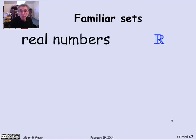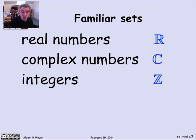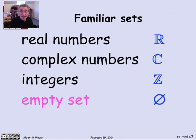We've already talked about some familiar ones. There's the real numbers, for which we had this symbol R in a special font, and the complex numbers C, and the integers Z. And we might have mentioned the idea of the empty set, for which we use this symbol that looks like a 0 with a line through it.